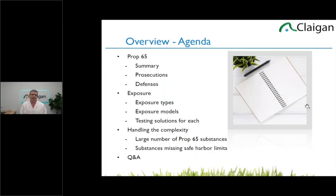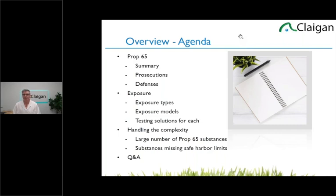Then I handle some of the really complicated elements. There are a huge number of Prop 65 substances — the 800 or 900 substances in scope. And how do you handle substances that don't have a safe harbor limit?